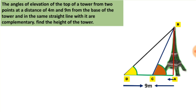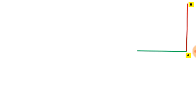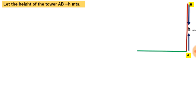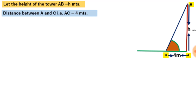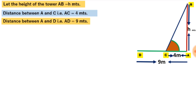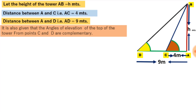Now let us set up the diagram. We take the ground and place the tower AB on it. Let us assume the height of the tower as H meters. From point C, which is 4m from the foot of the tower, the observer views the top at a certain angle of elevation. From point D, which is 9m from the foot, the observer again views the top at another angle of elevation. These two angles are complementary, as given in the problem.